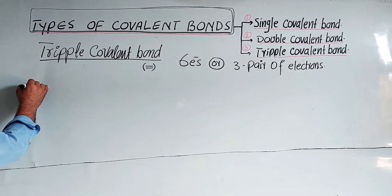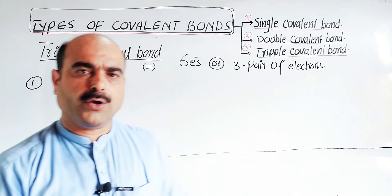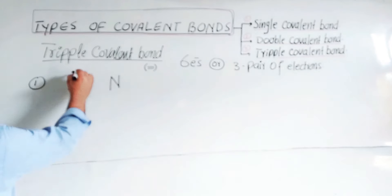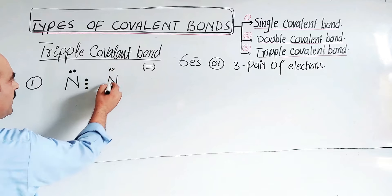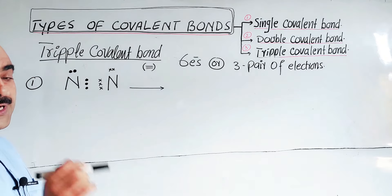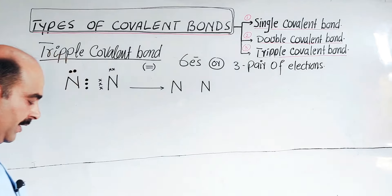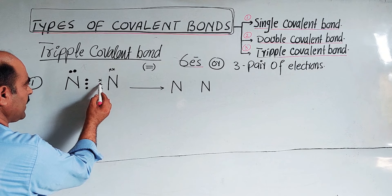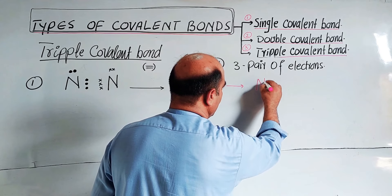Example one for triple covalent bond is the formation of nitrogen molecule (N2). Nitrogen has atomic number 7: first shell 2 electrons, second shell 5 electrons — so 5 valence electrons, with 3 electrons deficient. Both nitrogen atoms have 5 valence electrons and incomplete valence shells. One nitrogen atom equally shares 3 electrons with the other nitrogen's 3 electrons — total 6 electrons, three pairs — forming a triple covalent bond, represented by three short straight lines. The nitrogen atoms convert to N2 molecule, which is more stable than separated nitrogen atoms.